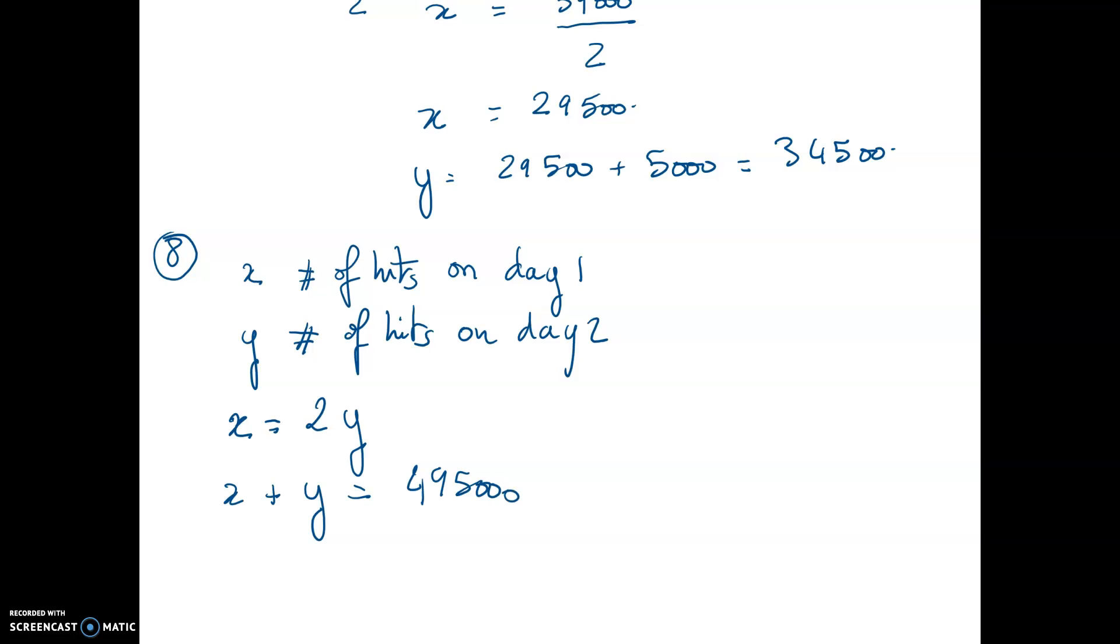And they are also telling you that the sum of the number of hits on day 1 plus the number of hits on day 2 is equal to 495,000. So that's pretty easy. Same idea. I'm going to substitute x inside my equation number 2. I have two equations, two variables.